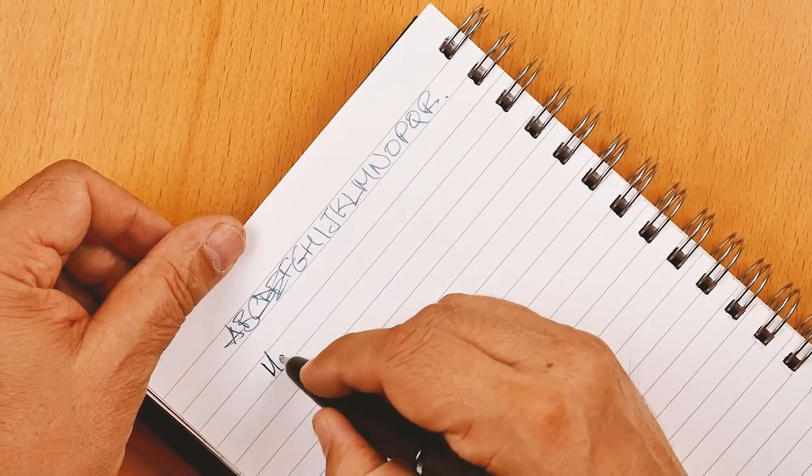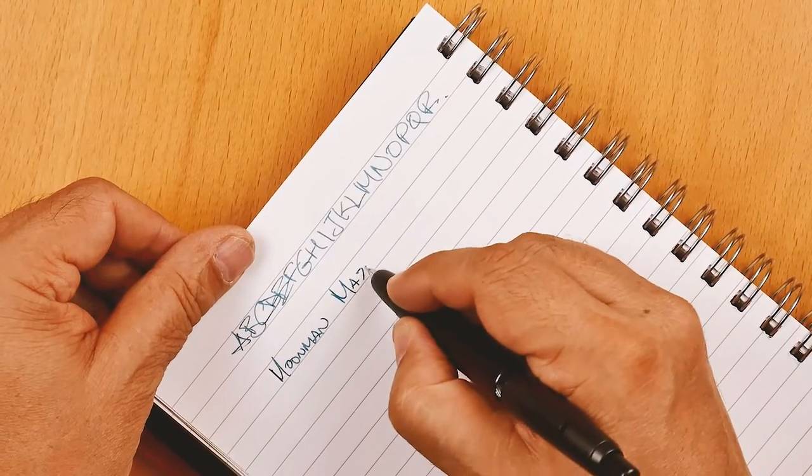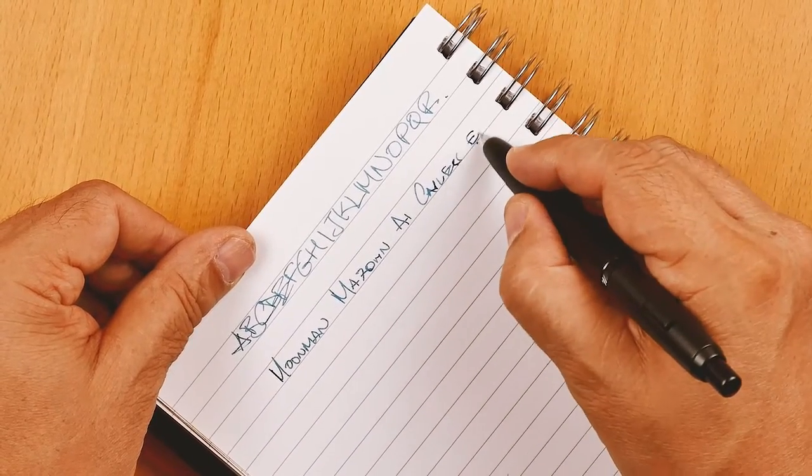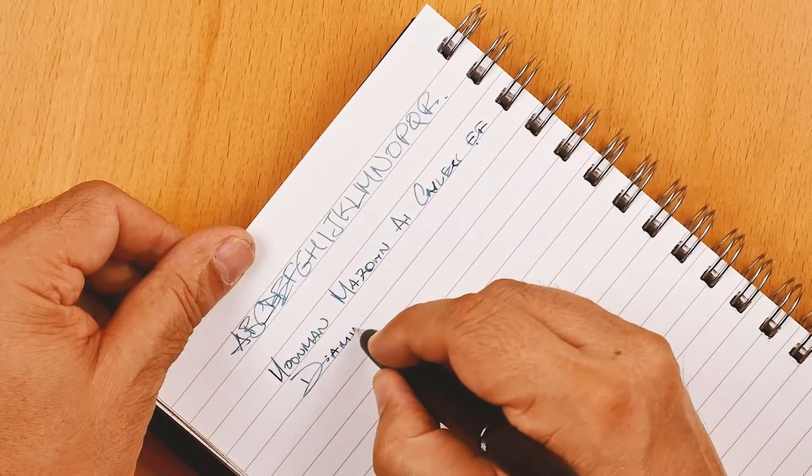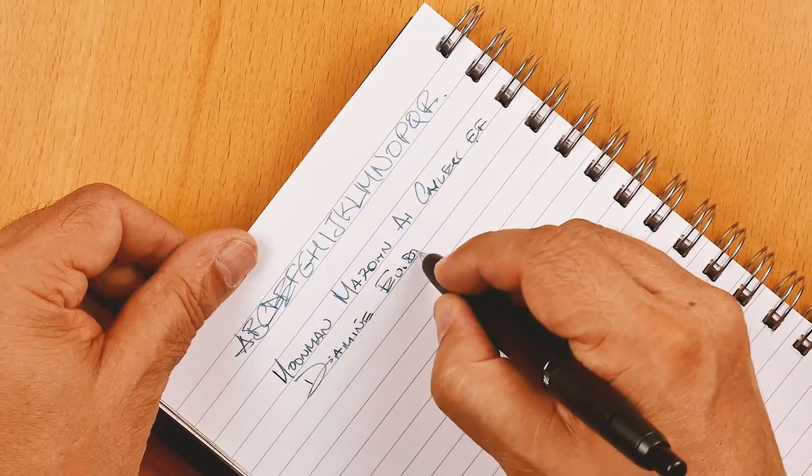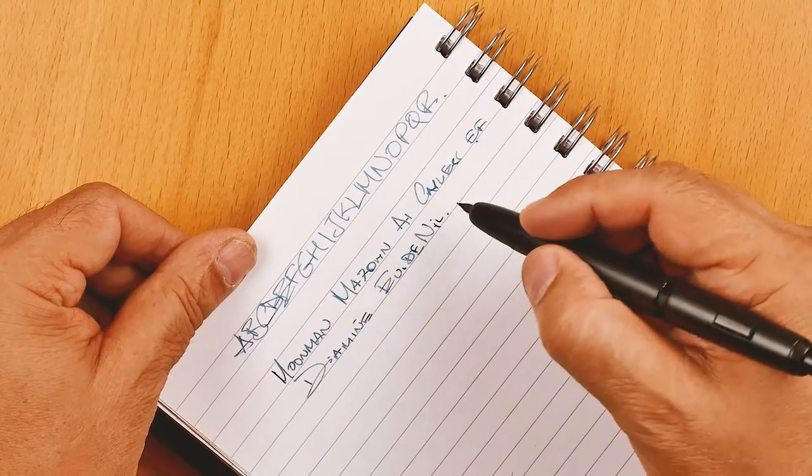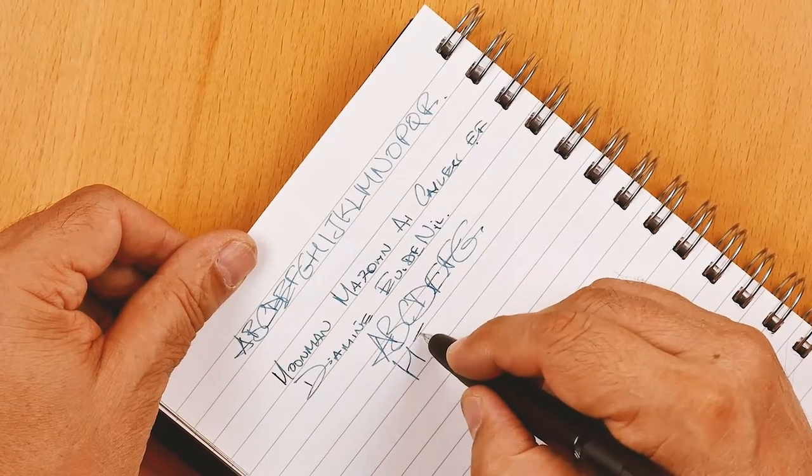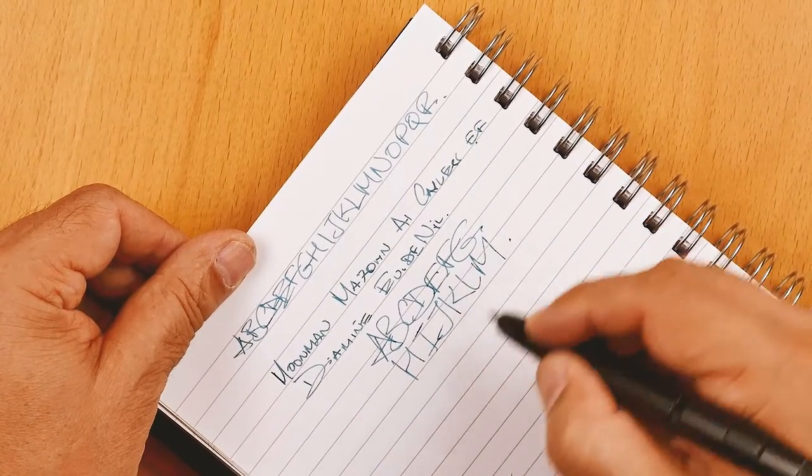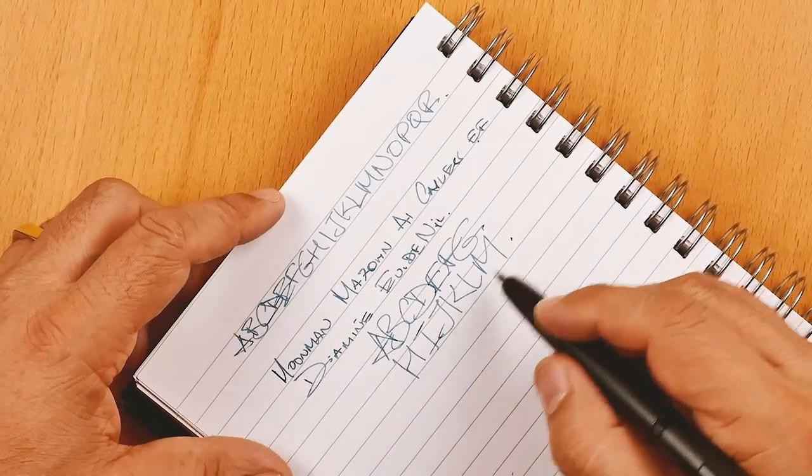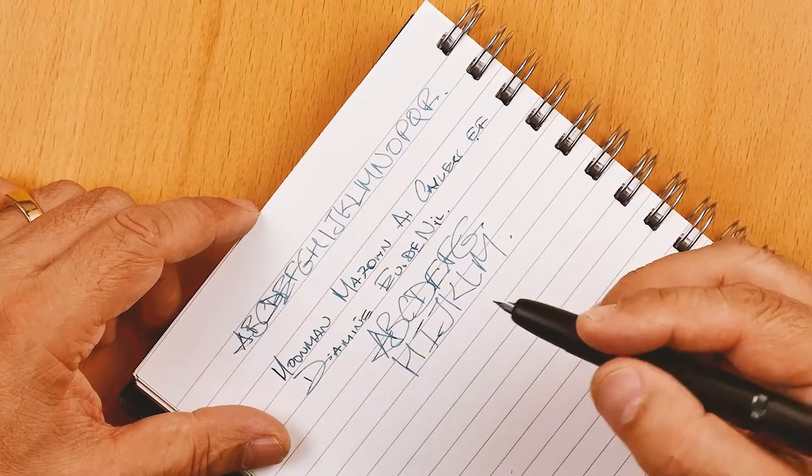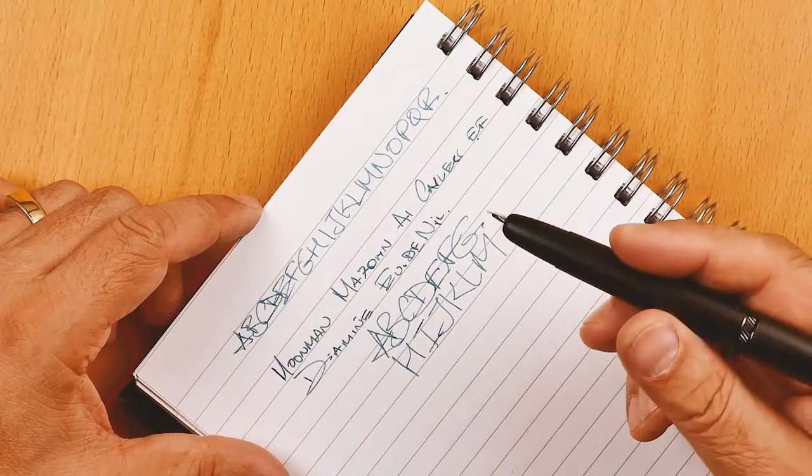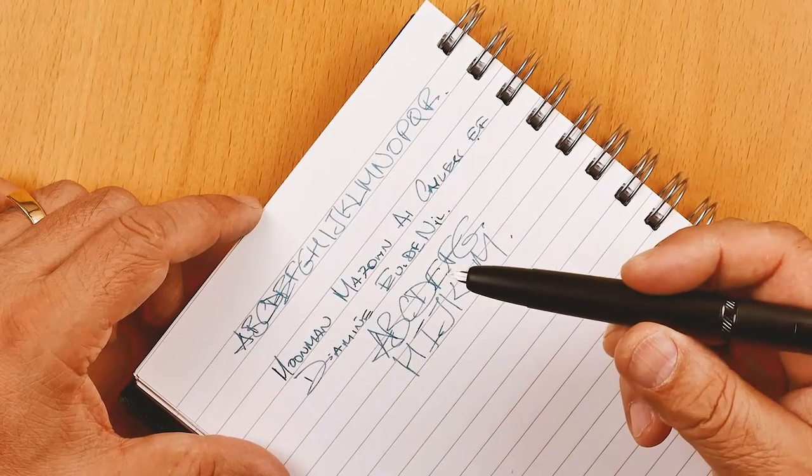And I'm really happy with the performance of the nib itself. Moonman Mahjong A1 capless extra fine, and this is Diamine Oxblood. No issues at all keeping up, no skipping, no hard starts. I'm really happy with the performance of this nib unit. And surprisingly for the cost, it's a great bargain, roughly about a quarter of the price of the Pilot itself.